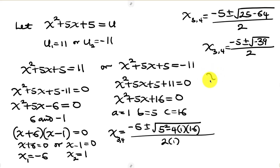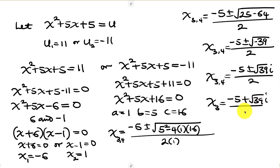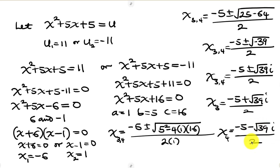Since we have a negative number inside the square root, we have complex solutions. The value of x equals negative 5 plus or minus the square root of 39 times i, all over 2. Separating them: x equals (negative 5 plus i√39) over 2, or x equals (negative 5 minus i√39) over 2. So we have four solutions in total — two real solutions and two complex solutions.